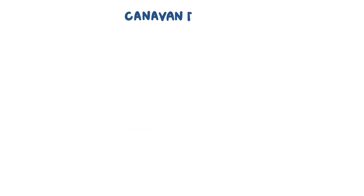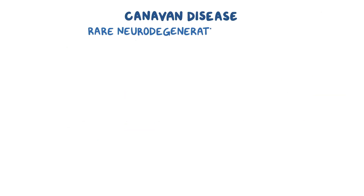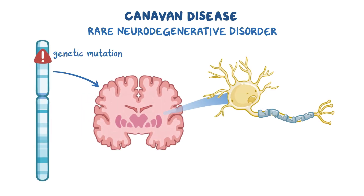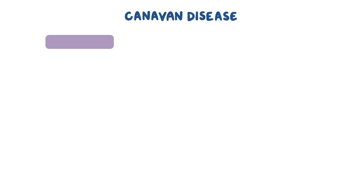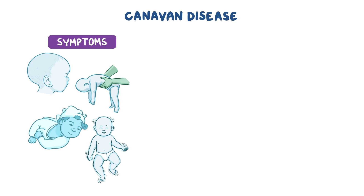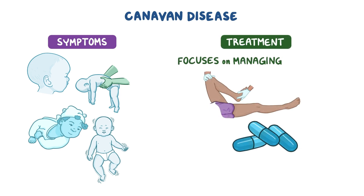As a quick recap, Canavan disease is a rare neurodegenerative disorder that causes degeneration of white matter in the brain due to genetic mutations in an enzyme necessary to break down NAA. Symptoms can include a large head size, low muscle tone, developmental delays, and seizures. There is no cure for Canavan disease, so treatment focuses on managing symptoms.